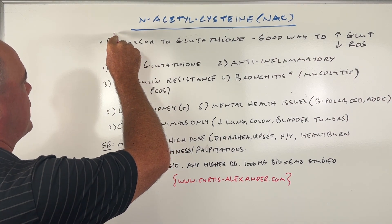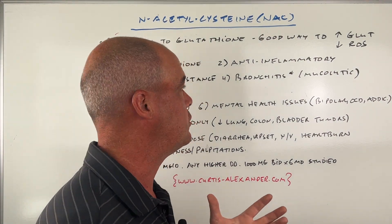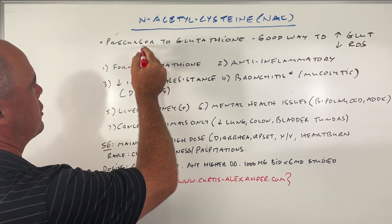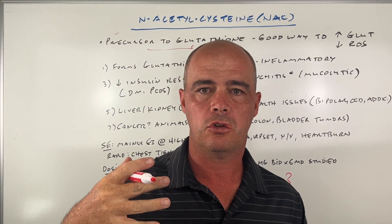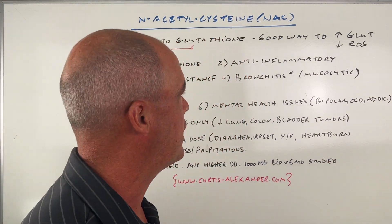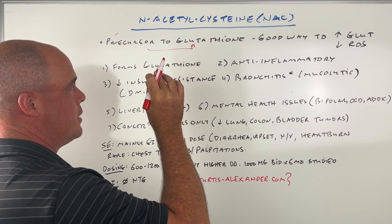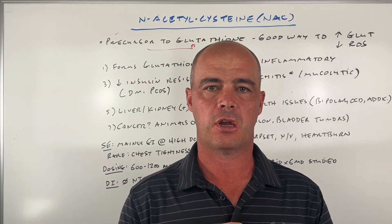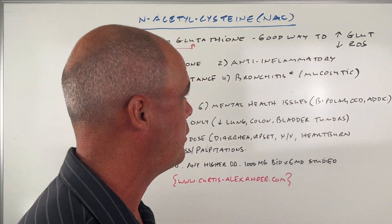NAC — I'm just going to refer to it as that, it's easier to say — is a precursor to glutathione. NAC gets converted to cysteine, which then goes into the liver and we see it converted to glutathione. Glutathione is really important because it's considered our master antioxidant. That's going to become important later in the video.